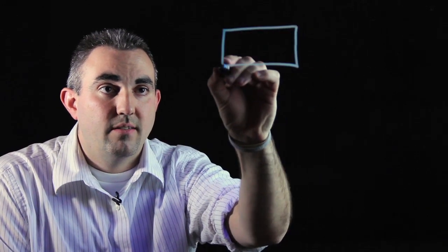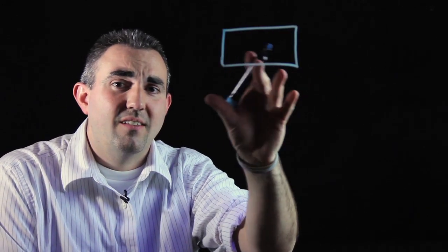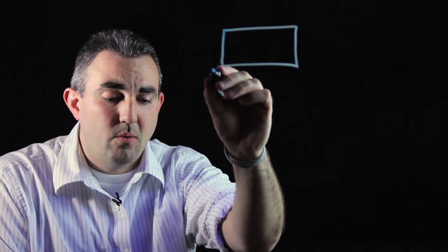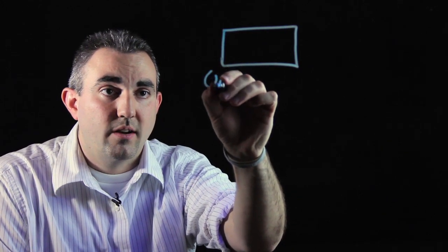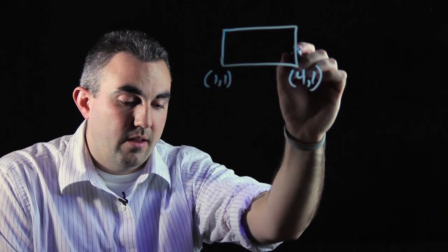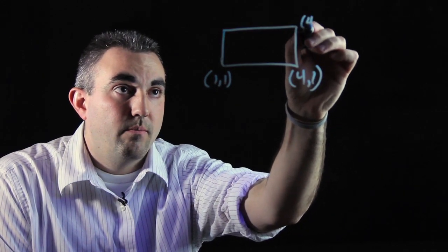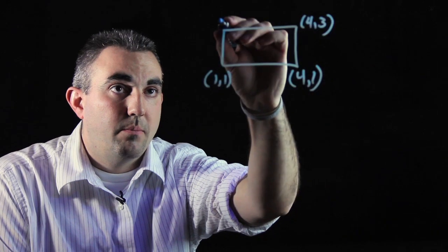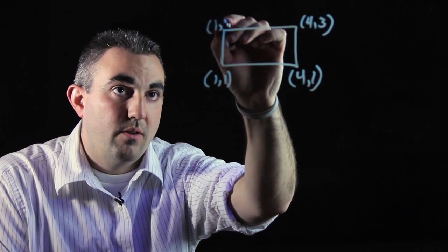So if you have a rectangle like this and we're going to base this as if it was on a coordinate plane with points. We're going to call this one comma one, four comma one, this will be four comma three, and up here will be one comma three.